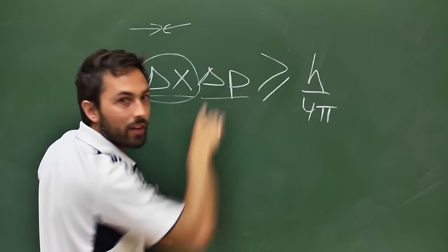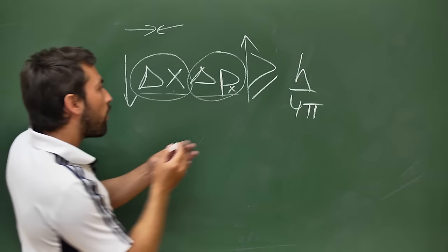So what needs to happen is the uncertainty in momentum needs to go up. I should specify this is uncertainty in momentum in the x direction, in the horizontal direction. So if before, photons were going perfectly straight,